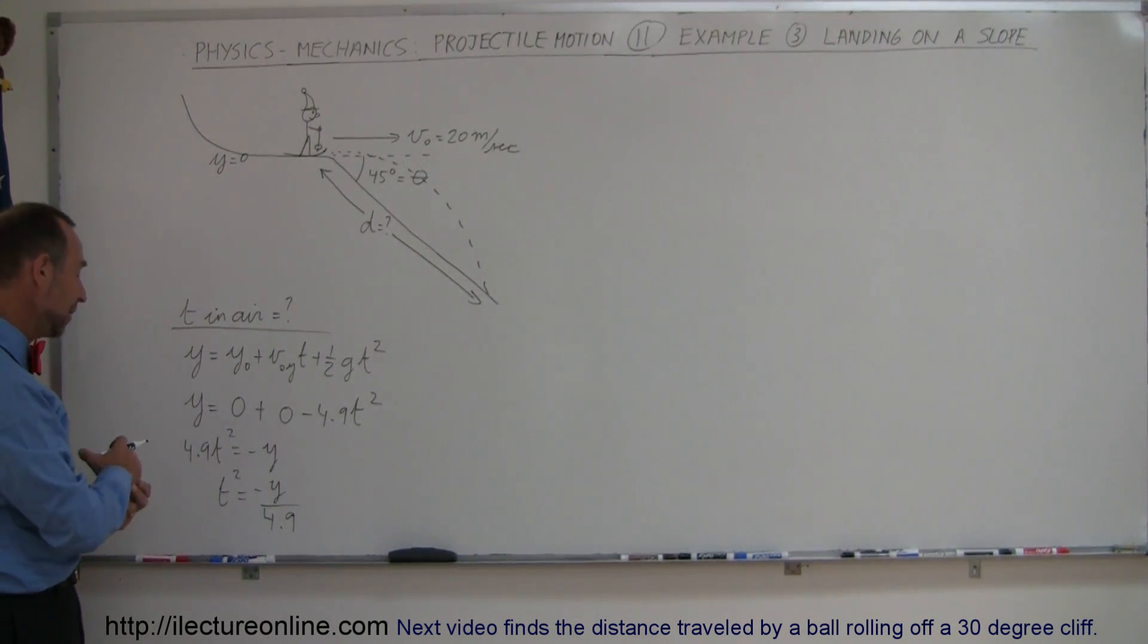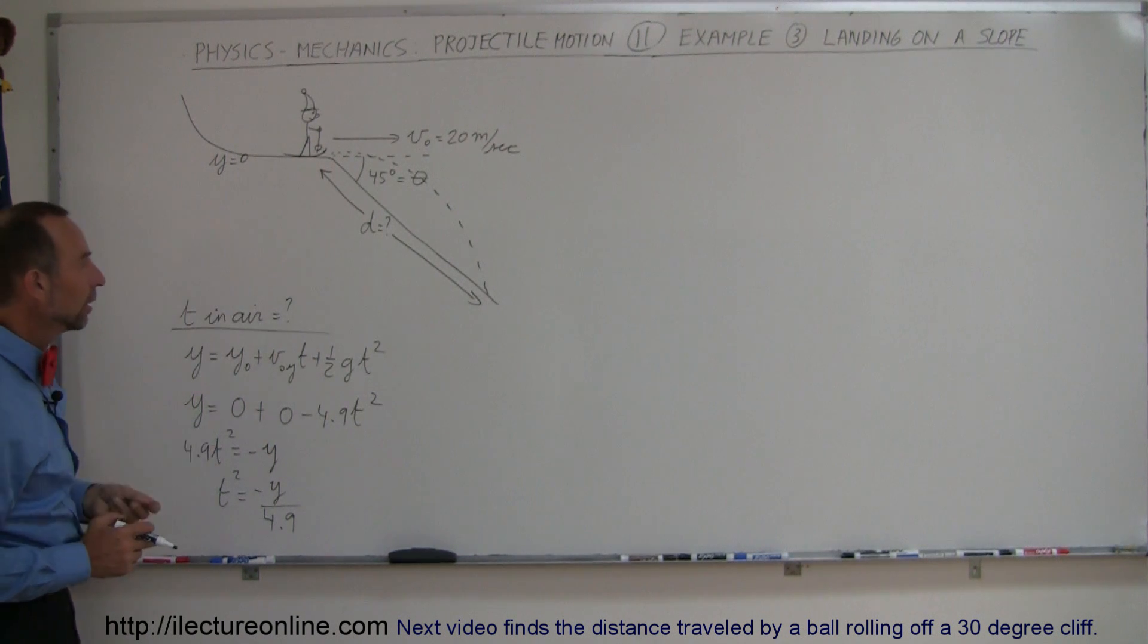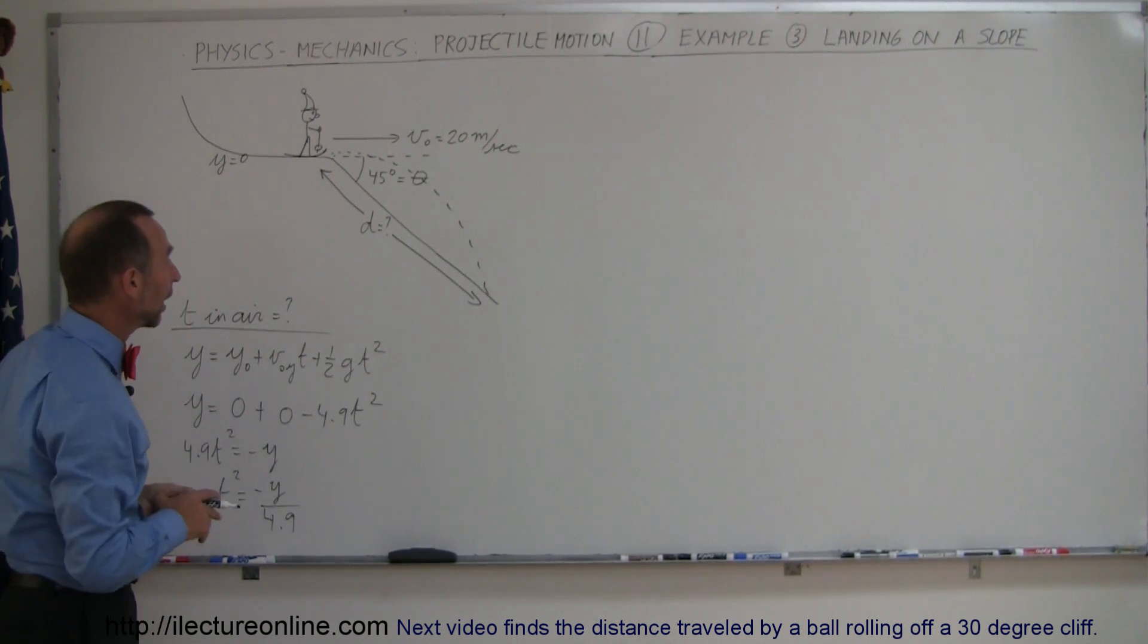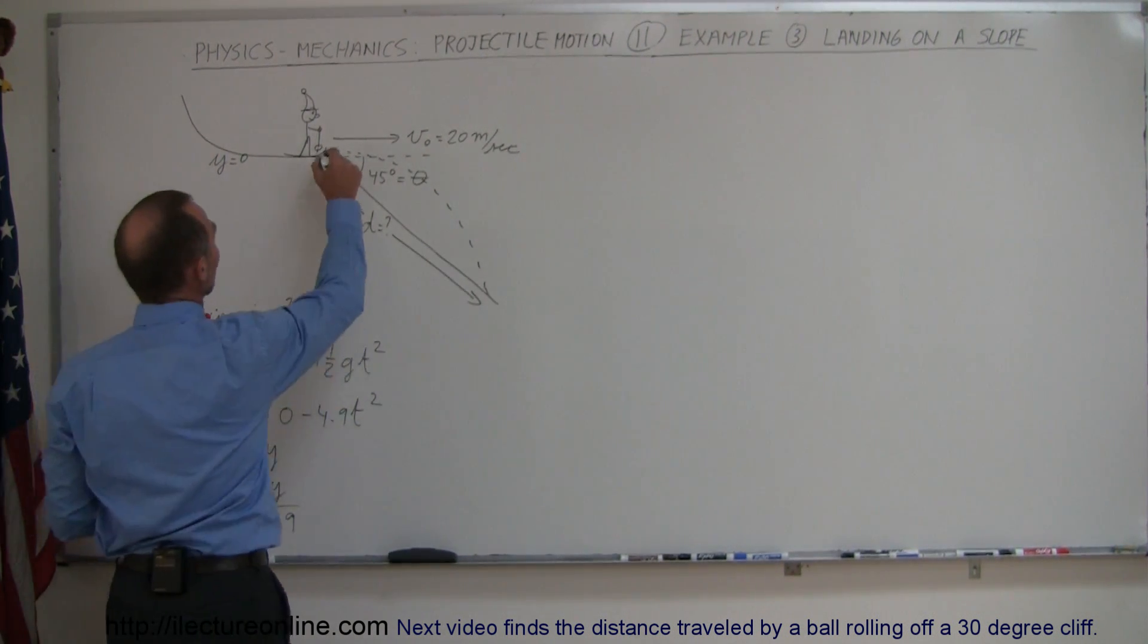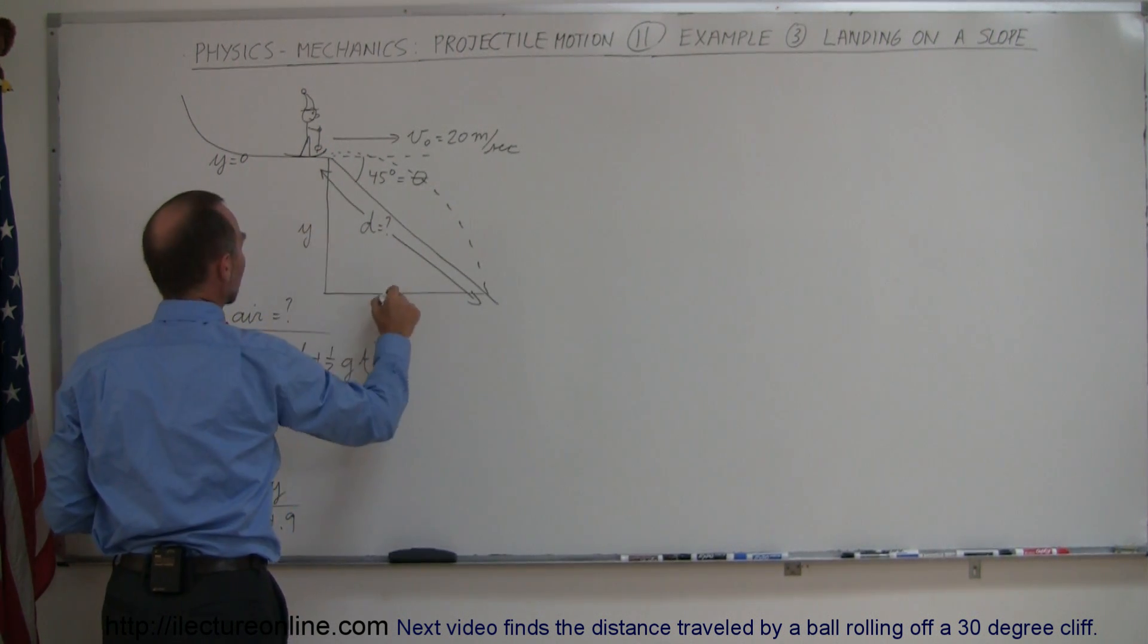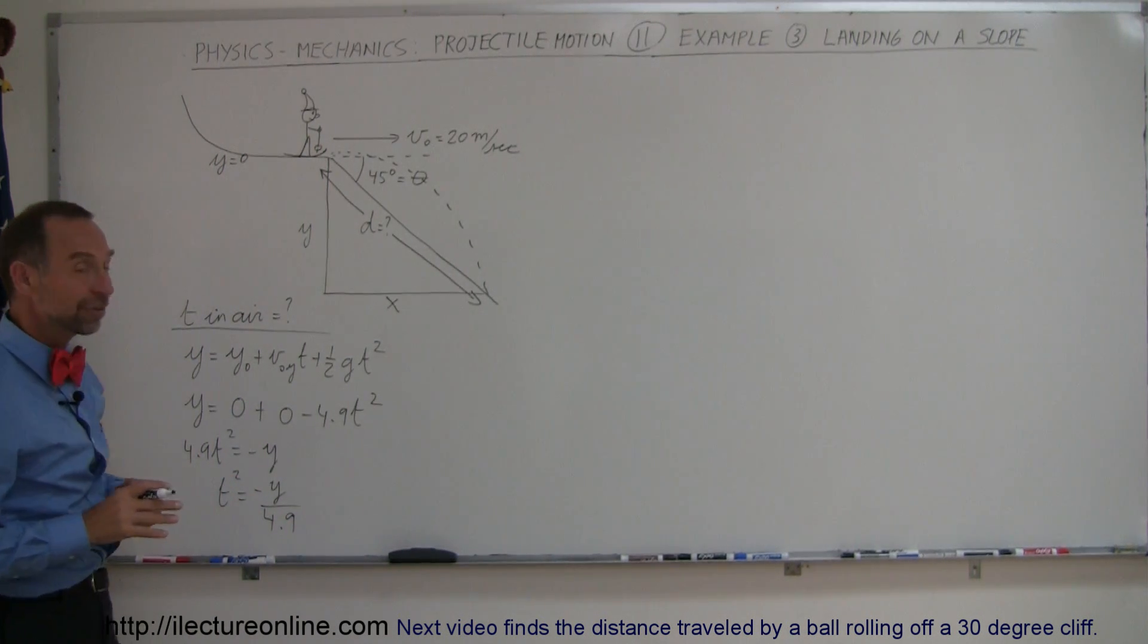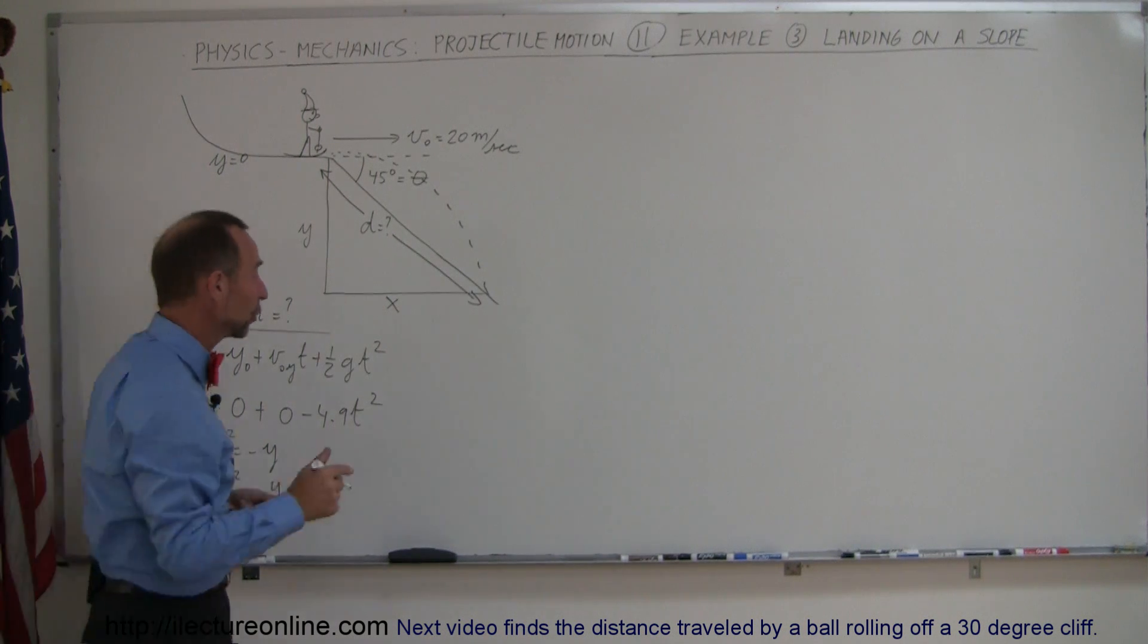Now we have a slight problem here, is that I cannot find the time because I don't know the y. I don't know how far down the person will land on the slope. What is the y distance here? So here we have the y distance and the x distance covered, and so when that happens, you may want to try to find time in the air using the x equation as well, or the equation in the horizontal direction.